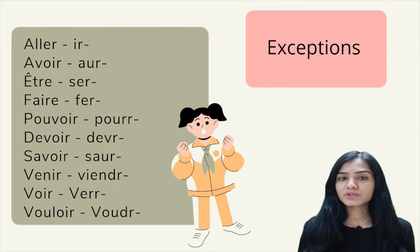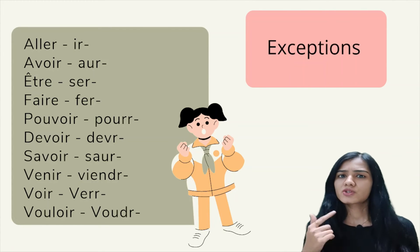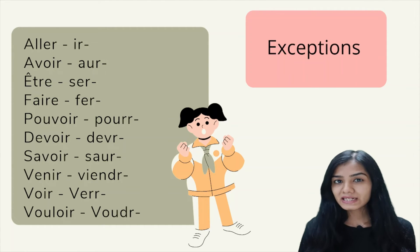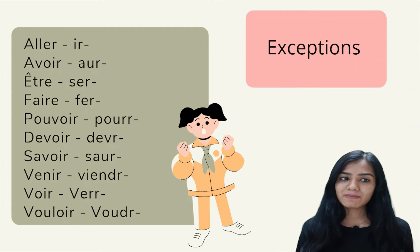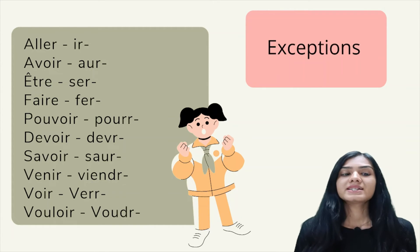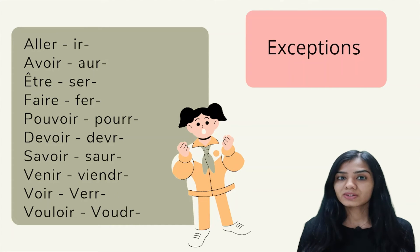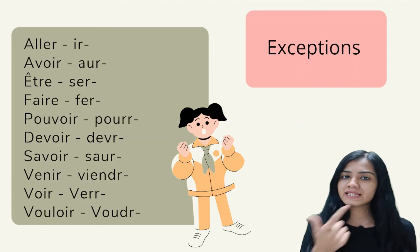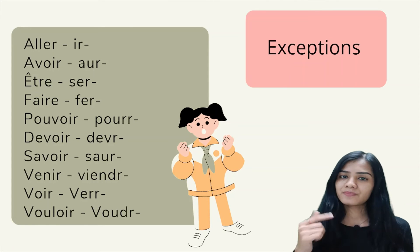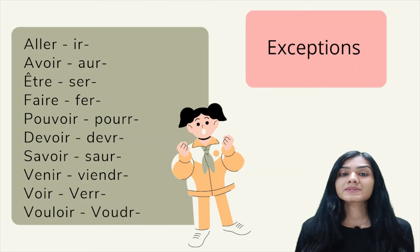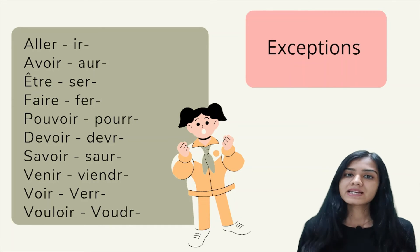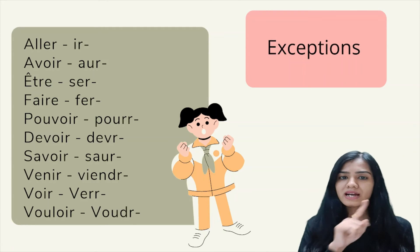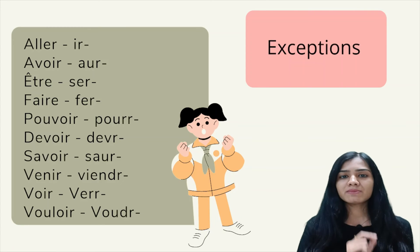We also have exceptions in futur simple. The exceptions involve the stem. For 'aller,' unlike regular ER verbs, the stem becomes 'ir' — so we add the endings to 'ir.' 'Avoir' becomes 'aur,' and we add the endings to 'aur.' Similarly, 'être,' 'faire,' 'pouvoir,' and others have irregular stems. You can pause the video here, note down all these exceptions, and memorize them for future use.